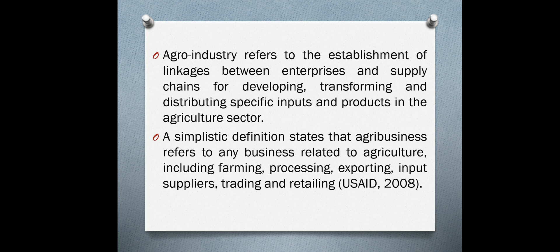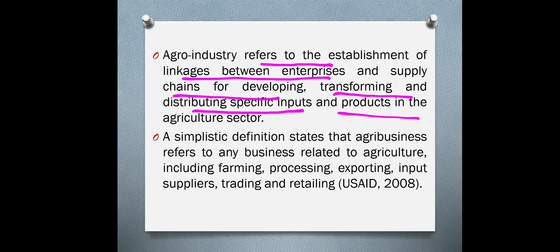Agro industry is a part of agribusiness management — those are industries which are based on agriculture. The definition of agro industry: agro industry refers to the establishment of linkages between enterprises and supply chains for developing, transforming, and distributing specific inputs and products in the agriculture sector. Agro industry can be divided into two parts: one related to backward or input supply, and another related to product distribution.